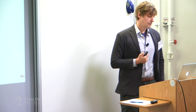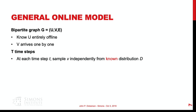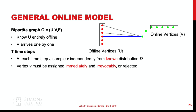Here's the online model. We have a bipartite graph. We know U entirely offline, and V arrives one by one sequentially. We have T time steps. At every time step T, we sample some vertex v from a known distribution D. When v arrives, we need to assign it immediately and irrevocably — meaning if I assign v to some vertex u, I can't go back and change the matching. We'll either assign v to a vertex u on the offline side, or reject v.